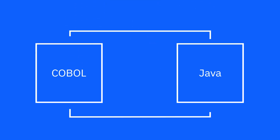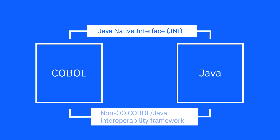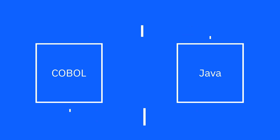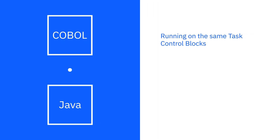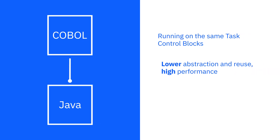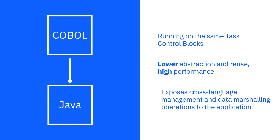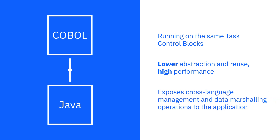In the final layer, there is process-level interoperability. Here, your COBOL processes can invoke Java and vice versa through the Java Native Interface and non-object-oriented COBOL and Java interoperability framework. In this example, everything is running on the same TCBs with COBOL functionality directly invoking Java logic and vice versa. Compared to the other approaches, this has the least overhead but exposes cross-language management and data marshalling operations to the application.